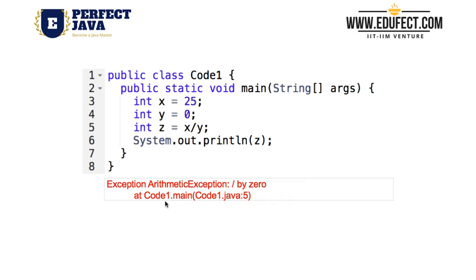Let us look at a slight variation of this code. Here we have int x is equal to 25, but we have changed the value of y to 0. Now when we come to line 5, we have int z is equal to x divided by y, which is 25 divided by 0. As we have just studied, when we divide by 0, division by 0 is not defined, so we get an arithmetic exception. At line 5 we will get an arithmetic exception, and because we are not handling the exception, the code will terminate and what gets printed on the screen is the exception.